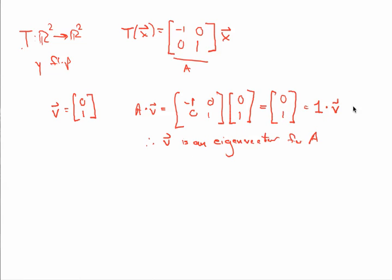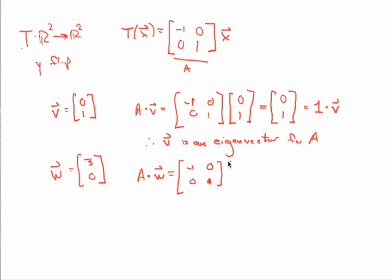Here's another eigenvector. Let's call this one w = (3, 0). Is (3, 0) an eigenvector for A? We multiply A times w: [(-1, 0), (0, 1)] times (3, 0). The first entry is (-1)(3) + (0)(0) = -3, and the second entry is (0)(3) + (1)(0) = 0. The result is (-3, 0), which is -1 times w. Since A times w equals a scalar times w, that makes w an eigenvector for A with eigenvalue λ = -1.